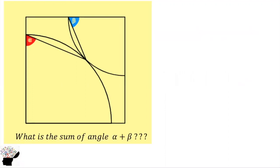First of all, we can draw a line from this side to this side. This is the quarter circle, so this is also the radius, this is also the radius, and this side to this side is also the radius.